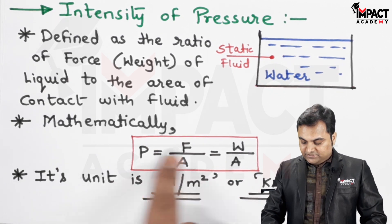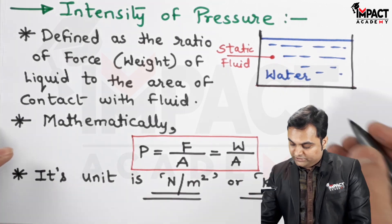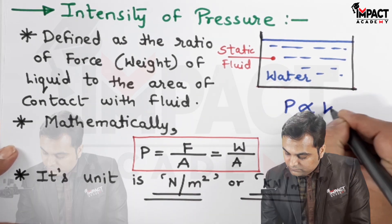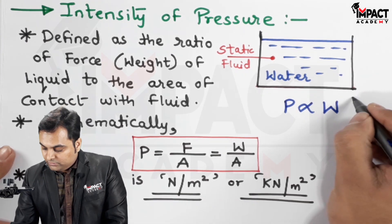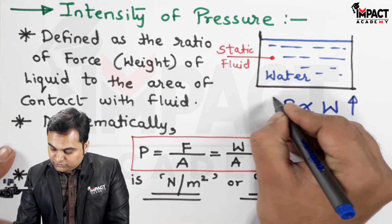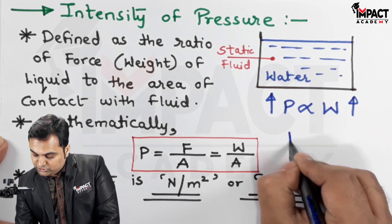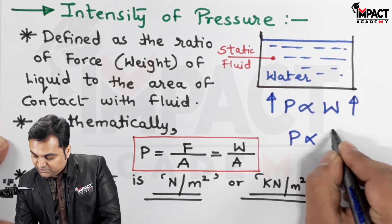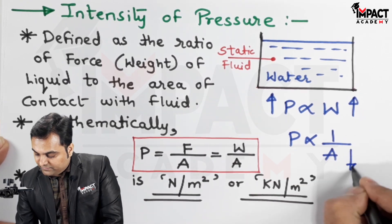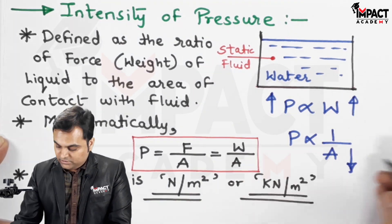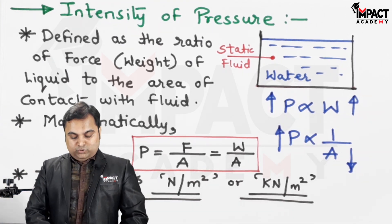The intensity of pressure is directly proportional to the weight of the fluid — if we go on adding more fluid, the weight increases and the intensity of pressure will increase. The intensity of pressure is also inversely proportional to area — if we decrease the area in contact, the intensity of pressure will go on increasing.